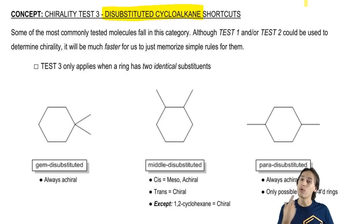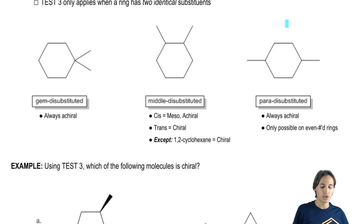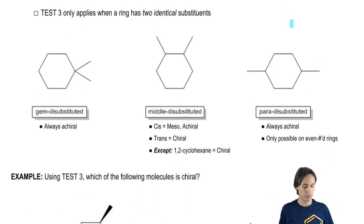These happen to be really commonly tested molecules in homework and in exams. If we can figure out a way to figure these out even quicker, that's going to save us time in the long run. These are really just shortcuts. What that means is that for all of these, you could use the other two rules, but if we just memorize these shortcuts, it's just going to make it even faster for us when we see these. There's basically three different types of rings that we deal with on a regular basis.